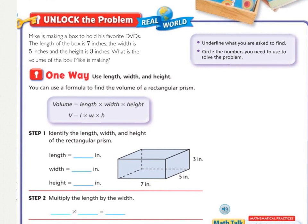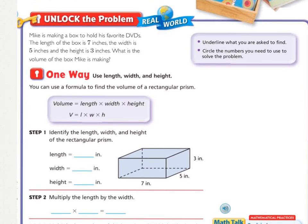So unlock the problem. Mike is making a box to hold his favorite DVDs. The length of the box is 7 inches, the width is 5 inches, and the height is 3 inches. What is the volume of the box Mike is making? Press pause and squiggle underline what you're being asked to find, circle the important information, and solid underline your label.